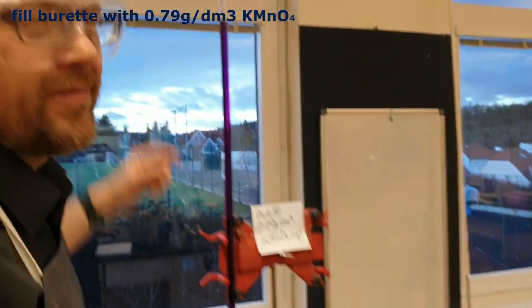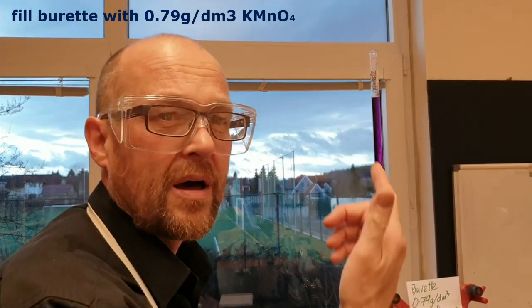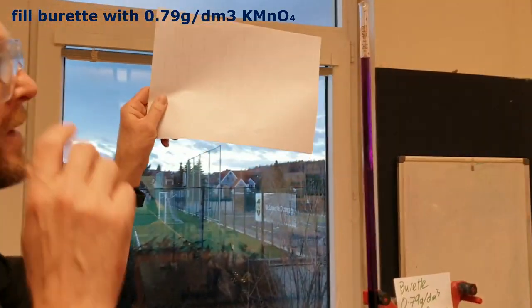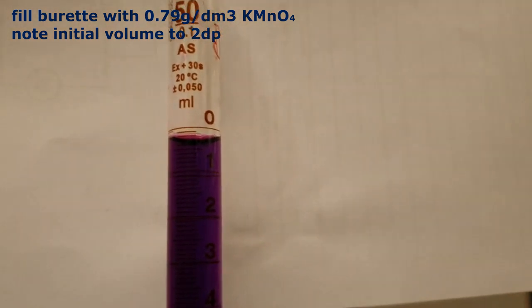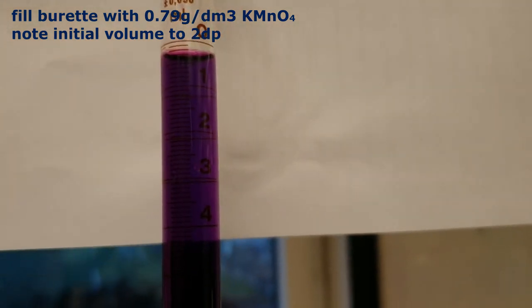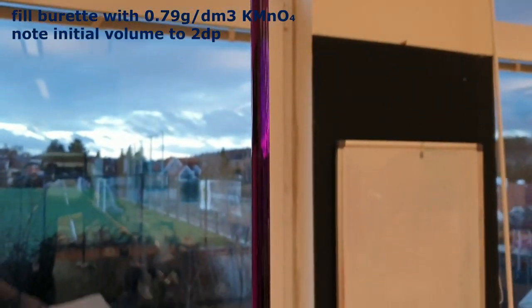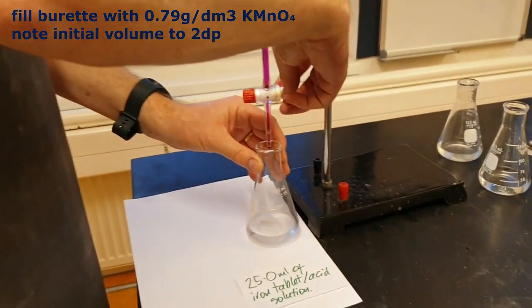Now, set this on zero. No, no, no. No professional sets it on zero. You just write down the number that it's at. Can you see? So that looks like 0.30. You can pause. Okay, the first titration is the rough one. So I'm just going to let it run.